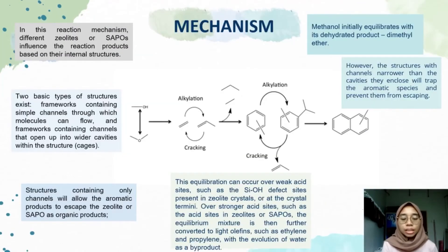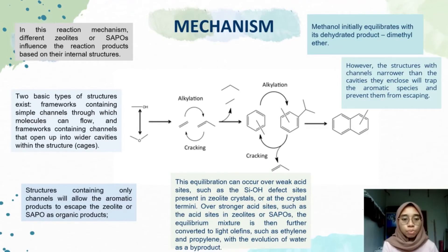In the reaction mechanism, different zeolites or SAPOs influence the reaction products based on their internal structure. Two basic types of structure exist: frameworks containing simple channels through which molecules can flow, and frameworks containing channels that open into widened cavities. The structure containing only channels allows aromatic products to escape the zeolite or SAPO as organic products.